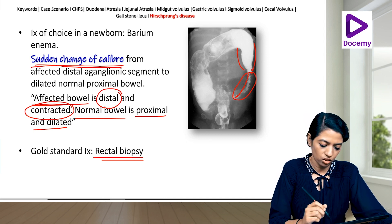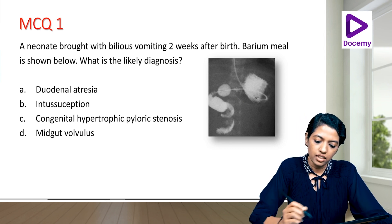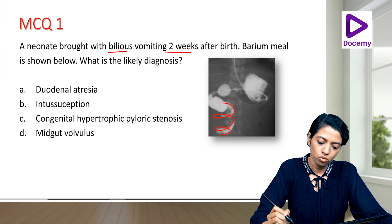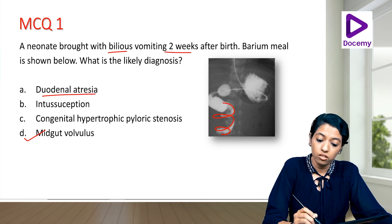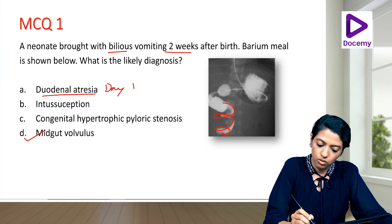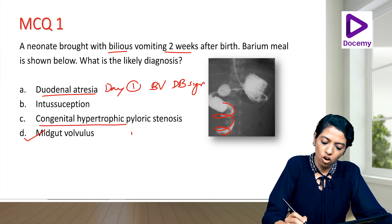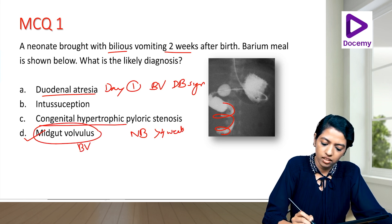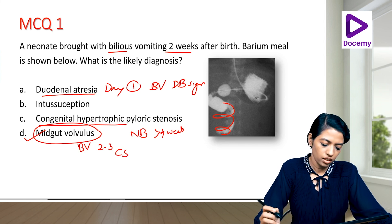MCQ 1: A neonate with bilious vomiting two weeks after birth — barium meal shows the corkscrew sign. The diagnosis is midgut volvulus. Duodenal atresia presents on day one with double bubble; CHPS is non-bilious vomiting after four weeks; midgut volvulus is bilious vomiting two to three weeks after birth with corkscrew sign.